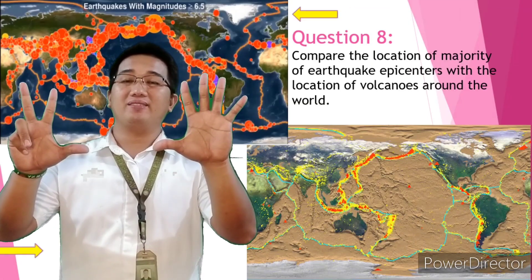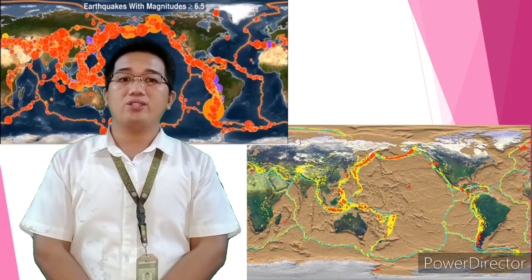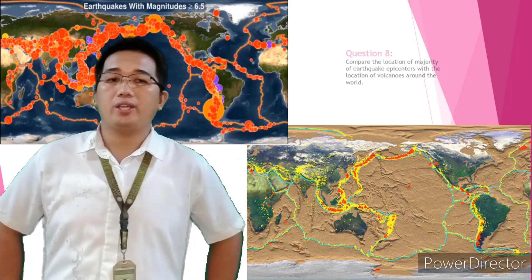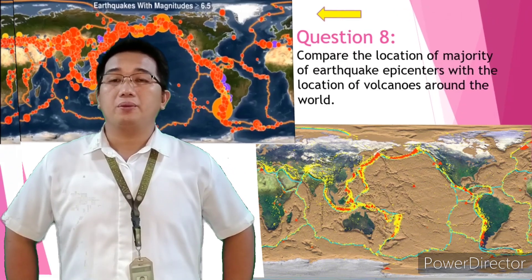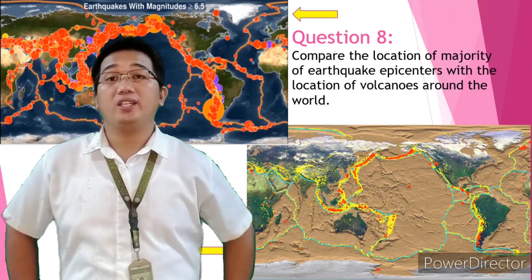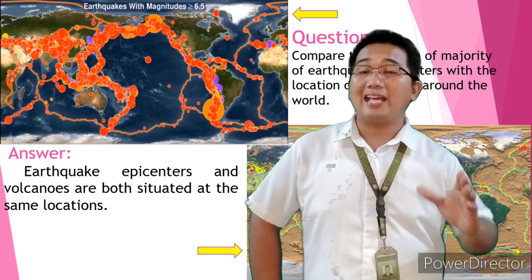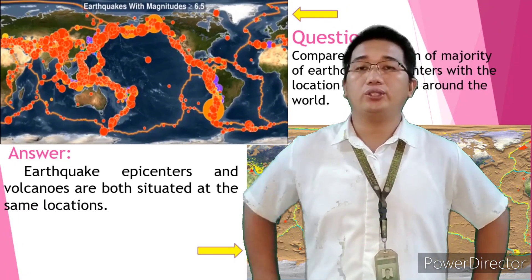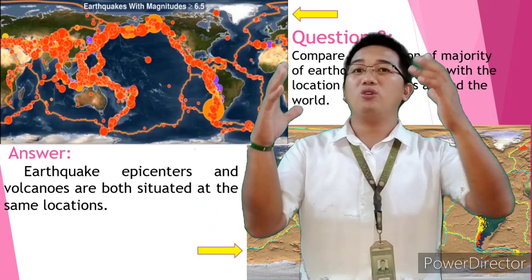Question number eight: let us compare the location of the majority of earthquake epicenters with the location of volcanoes around the world. By analyzing the two maps, we can easily answer that the earthquake epicenters and volcanoes are both situated at the same location.